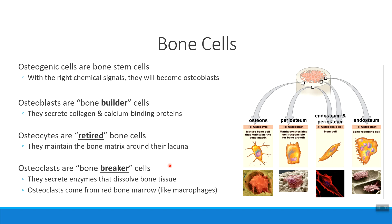When we talk about osteoclasts — my bone breaker cells — these don't actually originate from bone tissue like we've been discussing. They come from the red bone marrow, the place that makes immune system cells like macrophages, which are cells that eat up pathogens in your body. Macrophages are related to — they're a sibling of — my osteoclasts. So osteoblasts grow up and become osteocytes, while osteoclasts are a completely different type of cell.